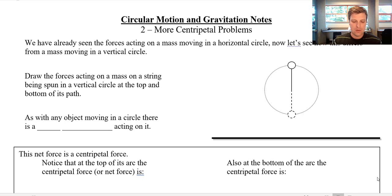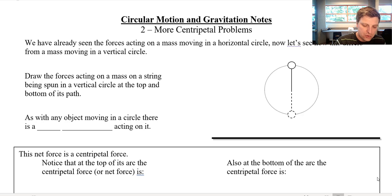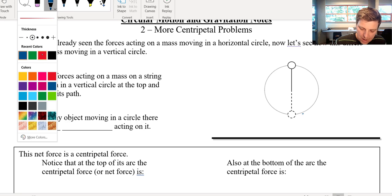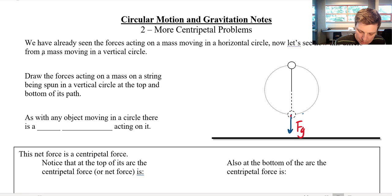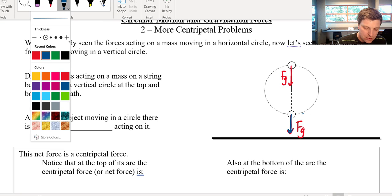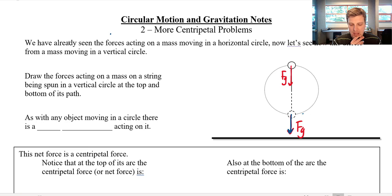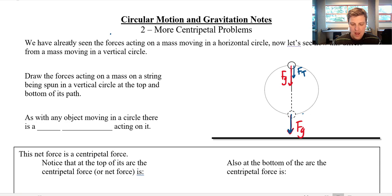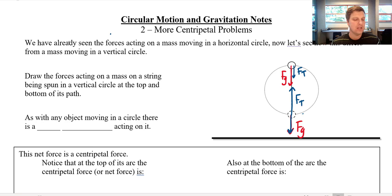The first example here, we're going to imagine a mass attached to a string being whirled around in a vertical circle — going up in the air and then coming back down and around. If we were to draw the forces acting on this, at the bottom of the circle I would have a force of gravity pulling downwards, FG downwards. At the top of the circle, I would also have FG downwards. I would also have a tension in the string. At the top, the tension in the string would be pulling downwards — call it FT. At the bottom, the tension in the string would be pulling upwards. The tension when it's at the bottom of the circle is not going to be the same as it is at the top.